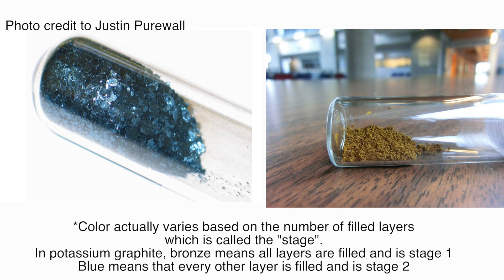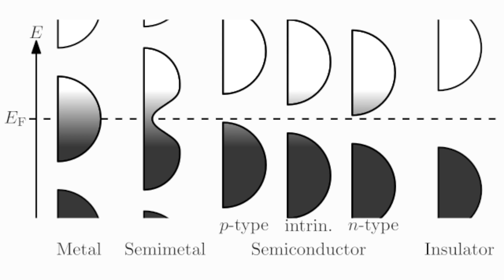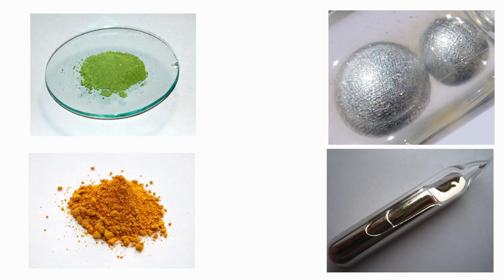It's also superconductive at very low temperatures, but it's also pyrophoric and will burst into flames on contact with oxygen, so it's kind of a mixed bag. Using intercalation, it's even possible to make graphite semi-conductive. If we intercalate with metal halides, we can get p-type materials, or if we use alkaline metals, we can get n-type materials.